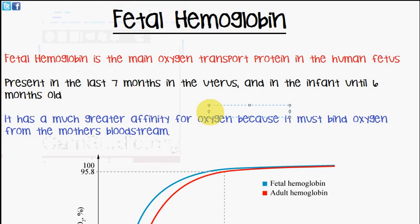Today's video is going to be discussing fetal hemoglobin. Fetal hemoglobin is the main oxygen transport protein in the human fetus, present in the last 7 months in the uterus and in the infant until 6 months old.